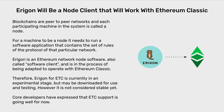Eragon will be a node client that will work with Ethereum Classic. Blockchains are peer-to-peer networks and each participating machine in the system is called a node. For a machine to be a node, it needs to run a software application that contains the set of rules of the protocol of that particular network. Eragon is an Ethereum network node software, also called a software client, and is in the process of being adapted to operate with Ethereum Classic. Therefore, Eragon for ETC is currently in an experimental stage but may be downloaded for use and testing. However, it is not considered stable yet.